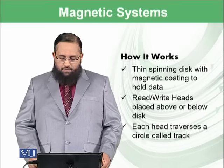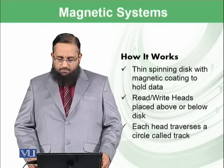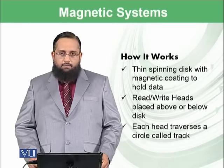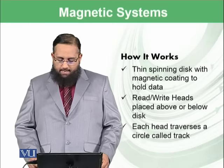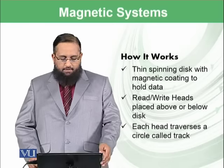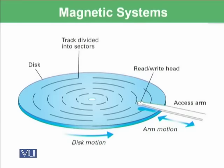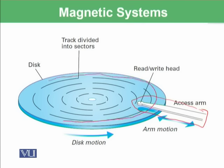How does it work? There is a thin spinning disk with a magnetic coating to hold data, and there is a read-write head placed above or below the disk, as I will show you in the next slide. Each head traverses a circle called a track. You can see here that there is a read-write head from which the data is being read, and these are the tracks. From one point going all the way around back to the start is called one track, and each track has different sectors.